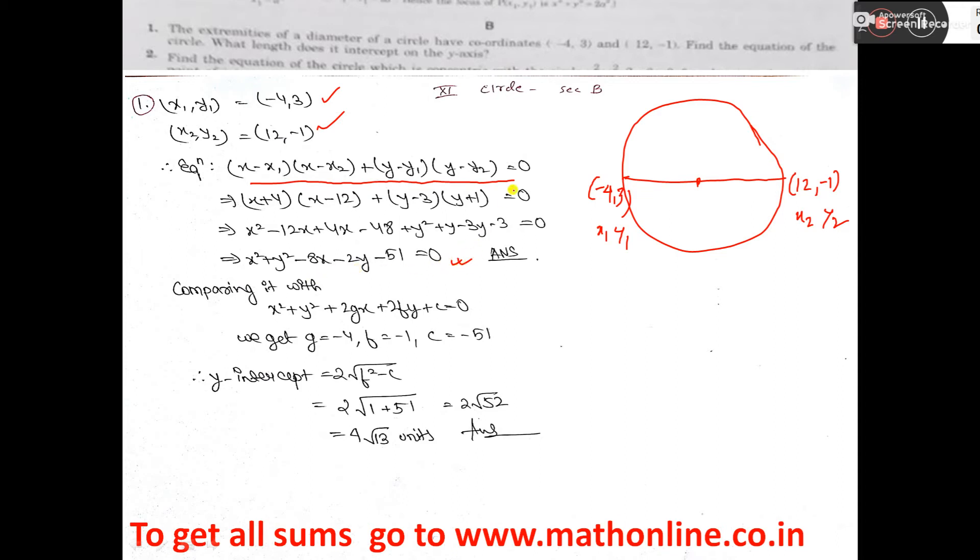Next we have to find y-intercept. Now y-intercept formula is 2√(f² - c). Now what is f and c? To get that, this equation you have to compare with x² + y² + 2gx + 2fy + c = 0. This is called general equation.